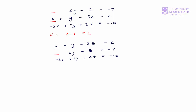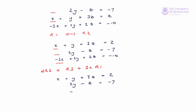Now we can move on to the third equation. We want to perform an operation that gives us a zero for the coefficient for x. If we add three times equation one to equation three we'll get that result: new row three equals row three plus three times row one. Equations one and two remain unchanged. We add three times equation one to equation three, so minus three x plus three x gives us zero x; two y plus three y gives us five y; two z plus nine z gives us eleven z. On the right hand side, minus ten plus three times two gives us minus four.